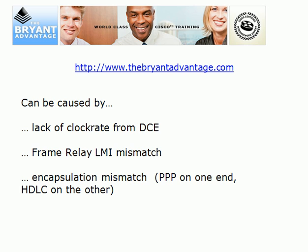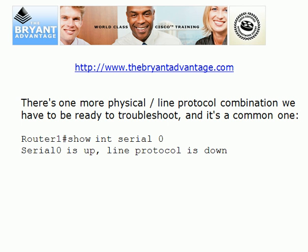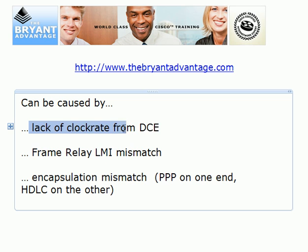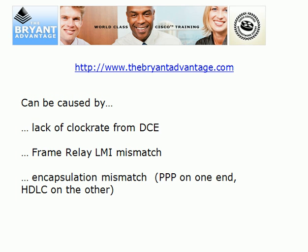An encapsulation mismatch can also bring the line protocol down. With a point-to-point connection, if you're running PPP on one end and HDLC on the other, it will go down. 'Serial zero is up, line protocol is down' is probably the most common combination requiring troubleshooting and has multiple causes. Ask yourself: what protocol am I running — HDLC, PPP, or Frame Relay? Do I have directly connected serial interfaces? Is a missing clock rate the problem?